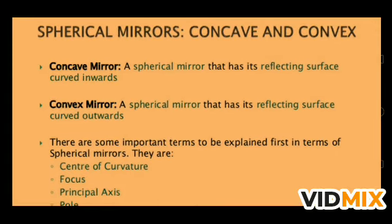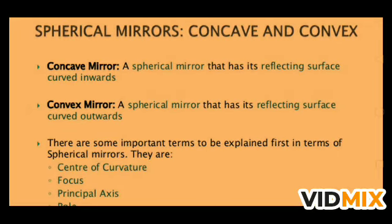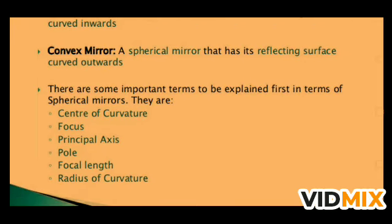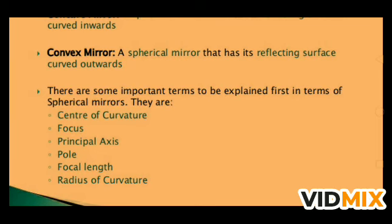Now coming to spherical mirrors, also discussed in the previous video. There are two types of spherical mirrors: concave mirror and convex mirror. A concave mirror has its reflecting surface curved inward, while a convex mirror is one that bulges outward. There are some important terms for spherical mirrors: center of curvature, focus, principal axis, pole, focal length, and radius of curvature.